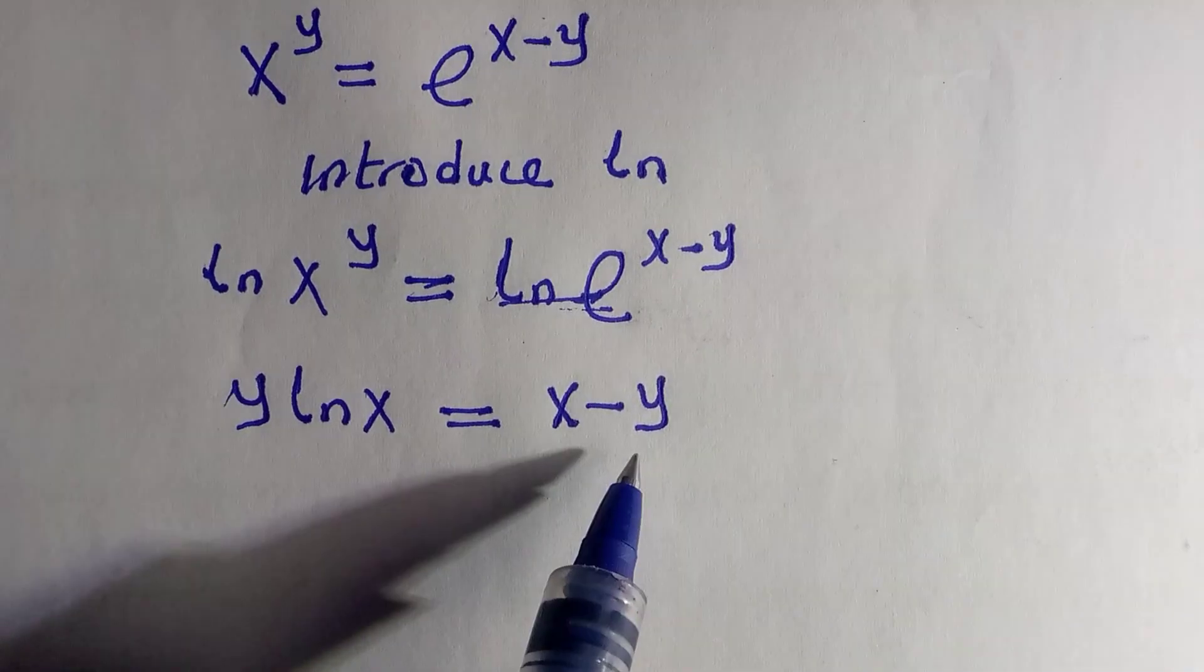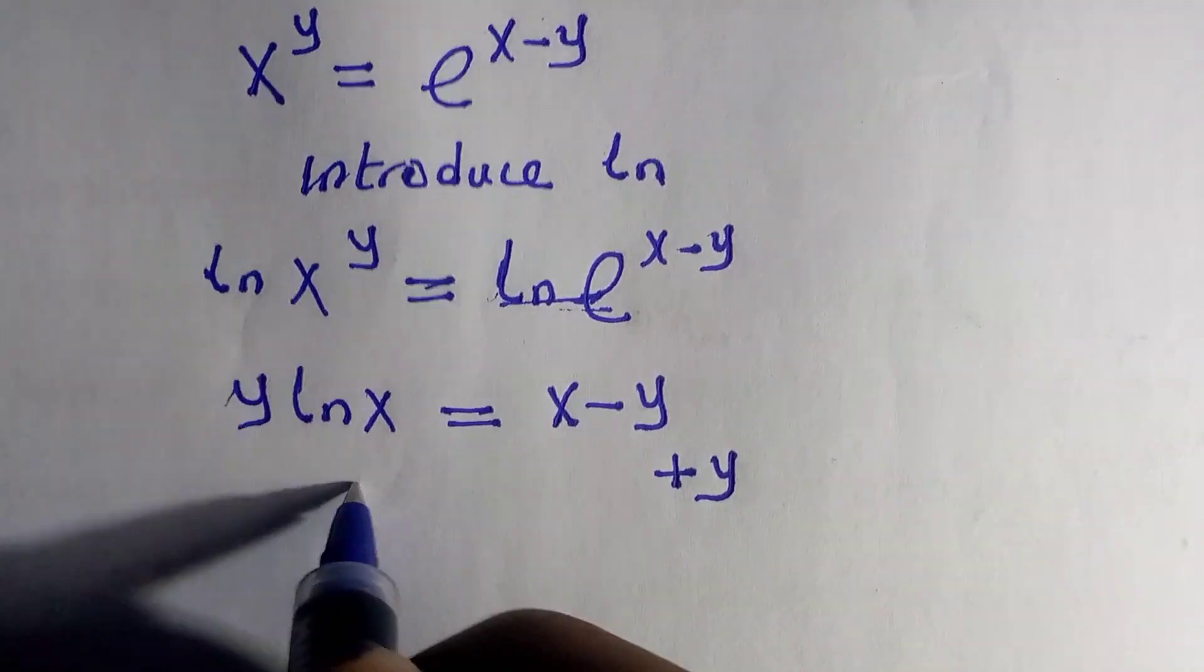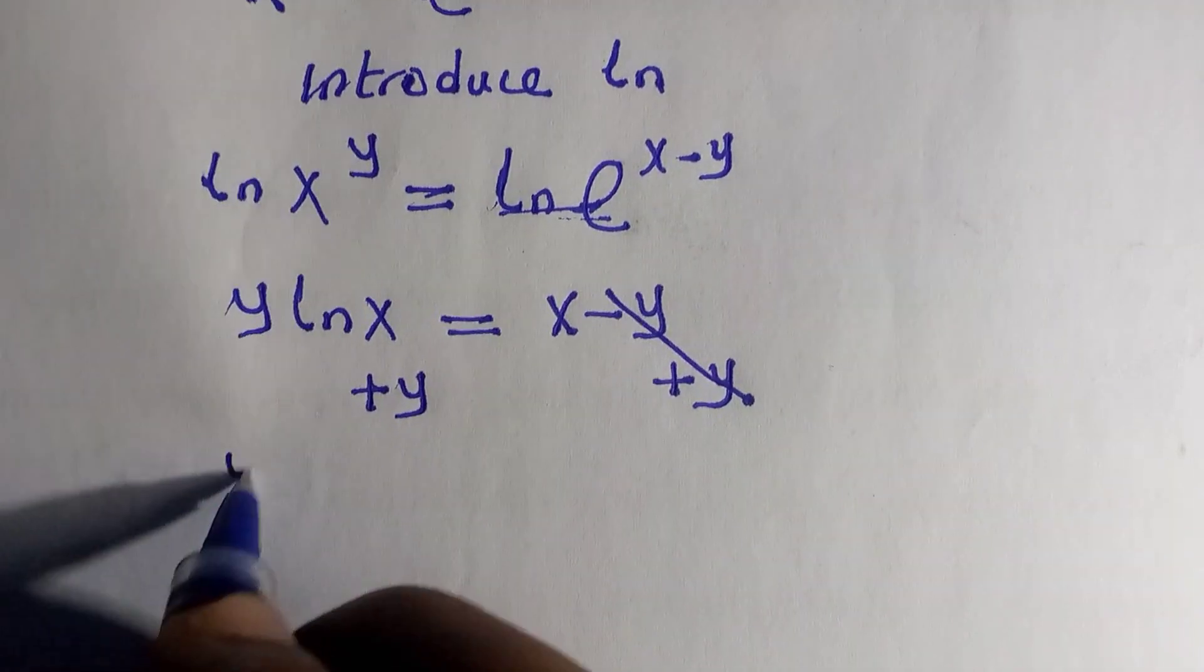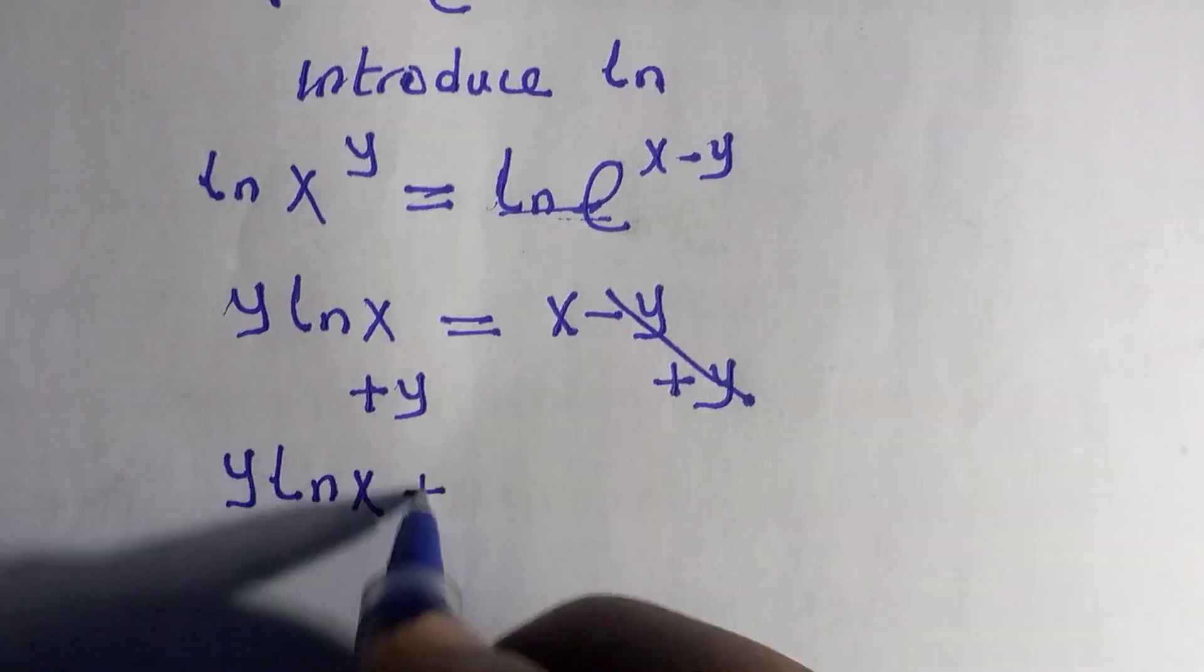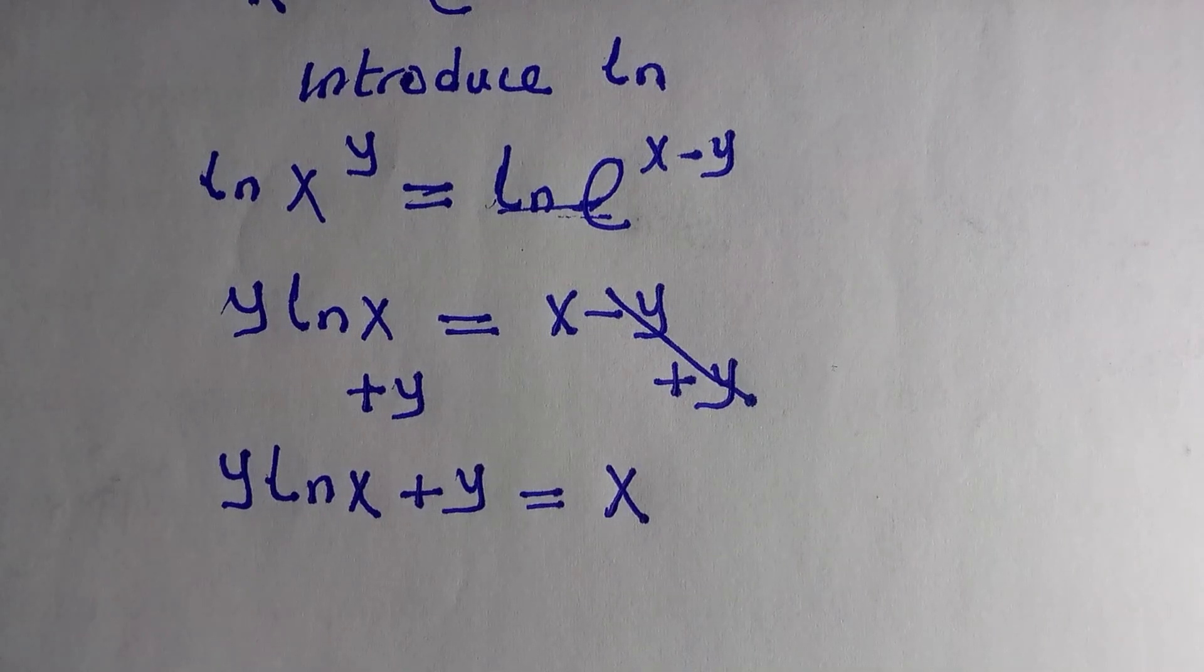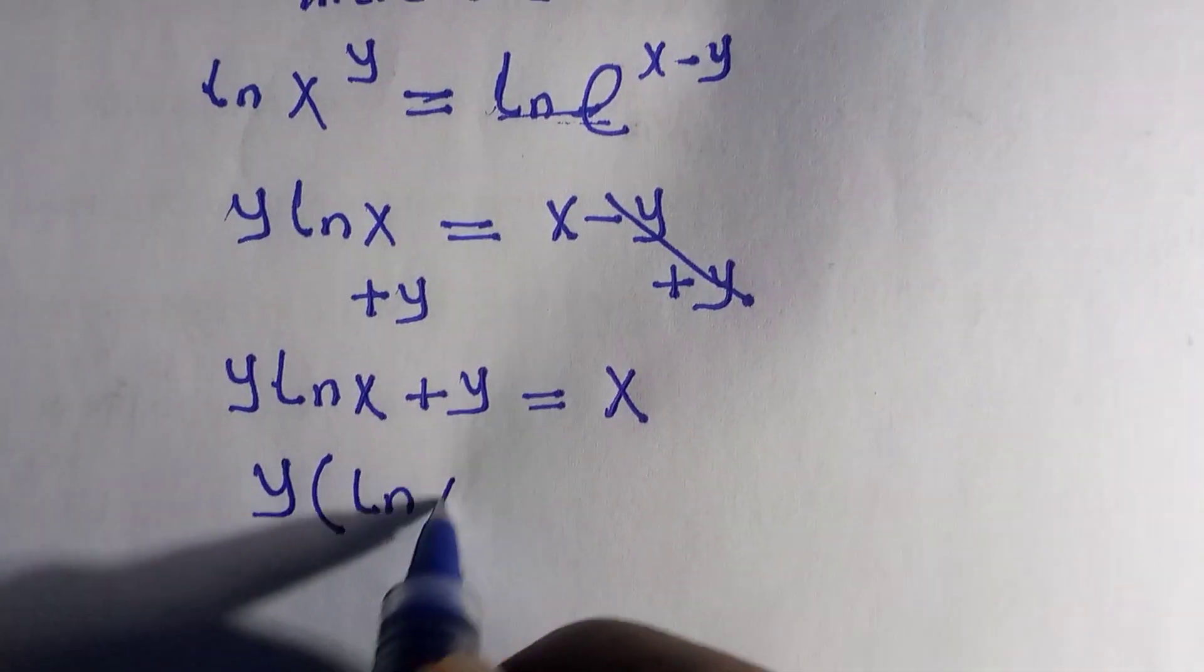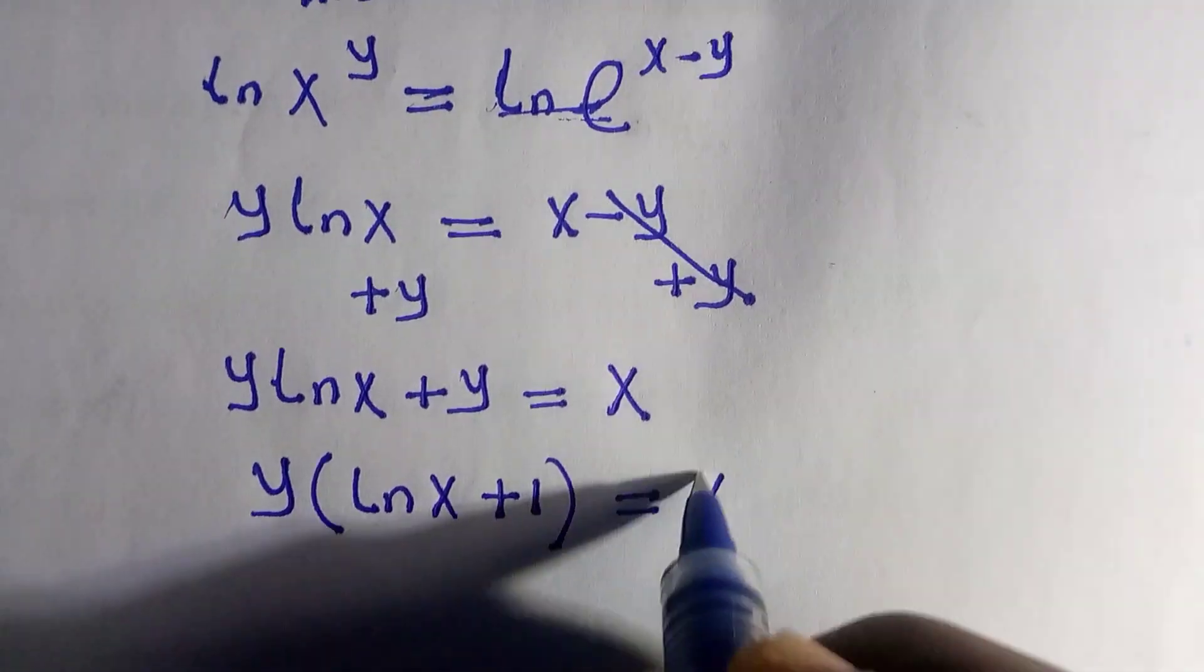Then we have y here, I will take it here, and by doing that we have plus y here plus y here. And if these two negate each other we have y ln x plus y equals to x.